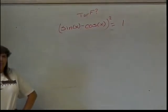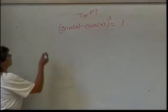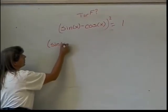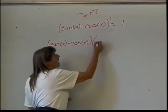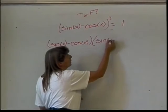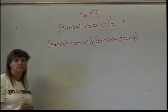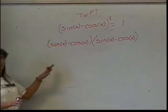Yeah. So this says, this is sine of x minus cosine of x, times sine of x minus cosine of x. All right, so far so good. Now, FOIL it out.